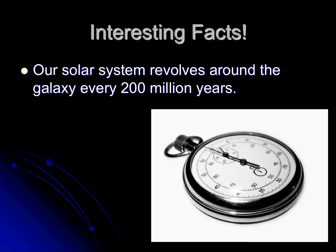Our solar system revolves around the galaxy every 200 million years. So our solar system completes one revolution of the Milky Way galaxy in 200 million years.